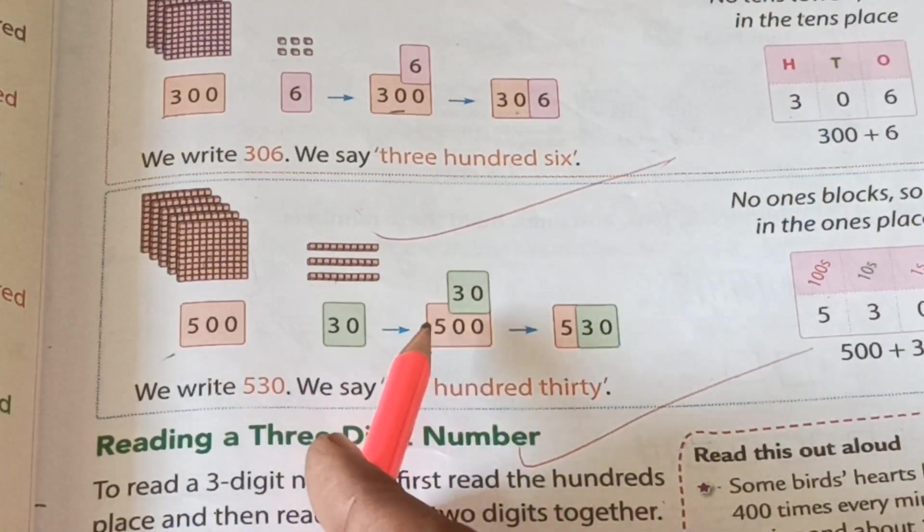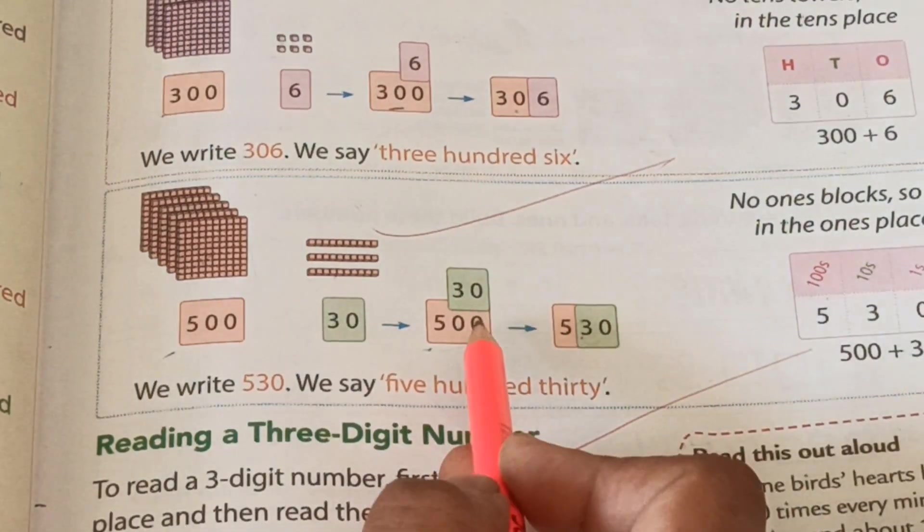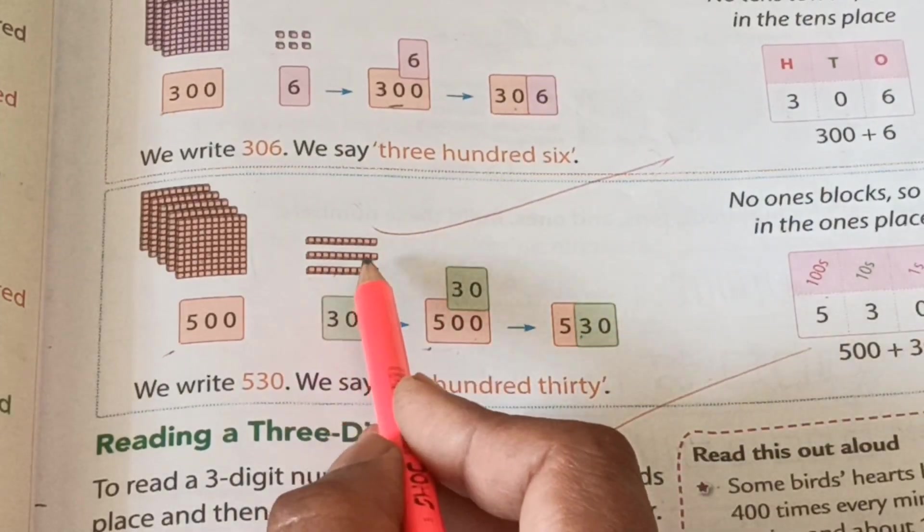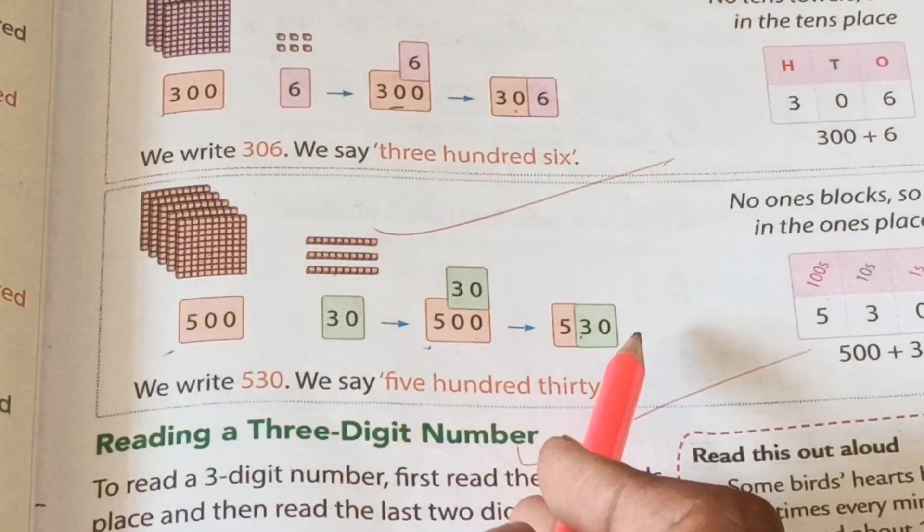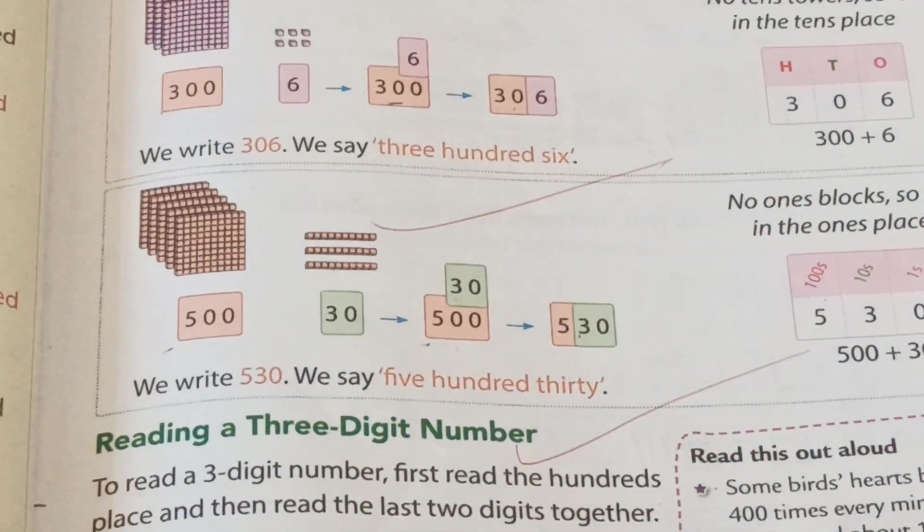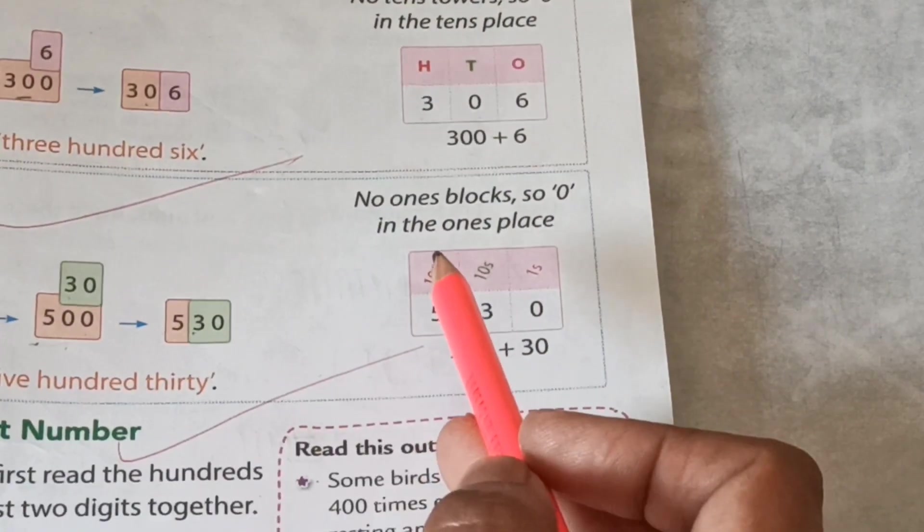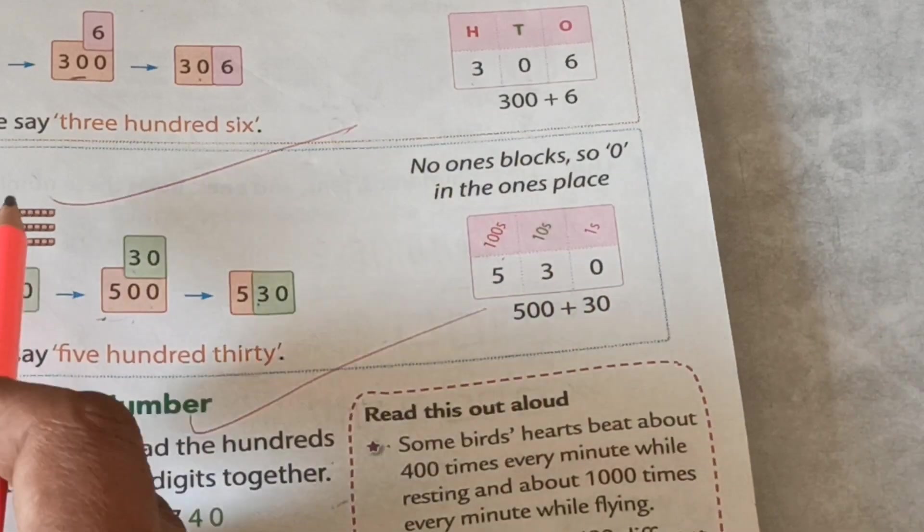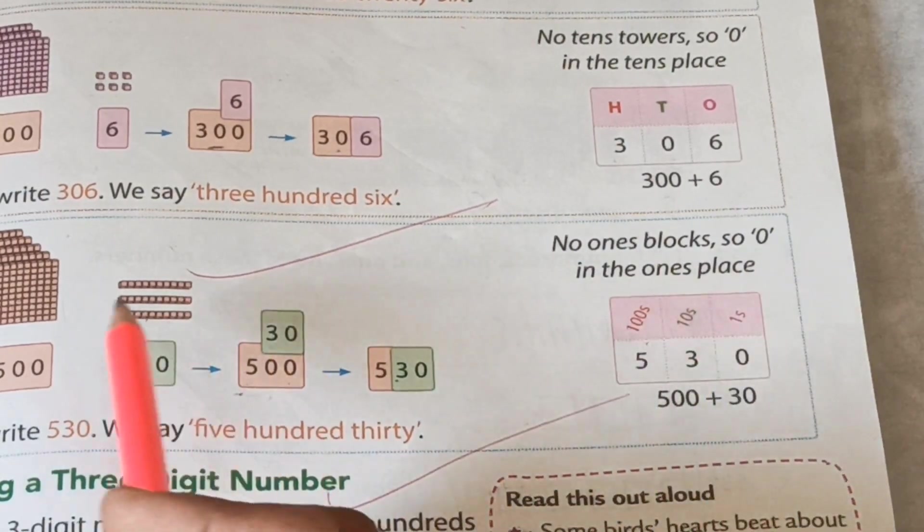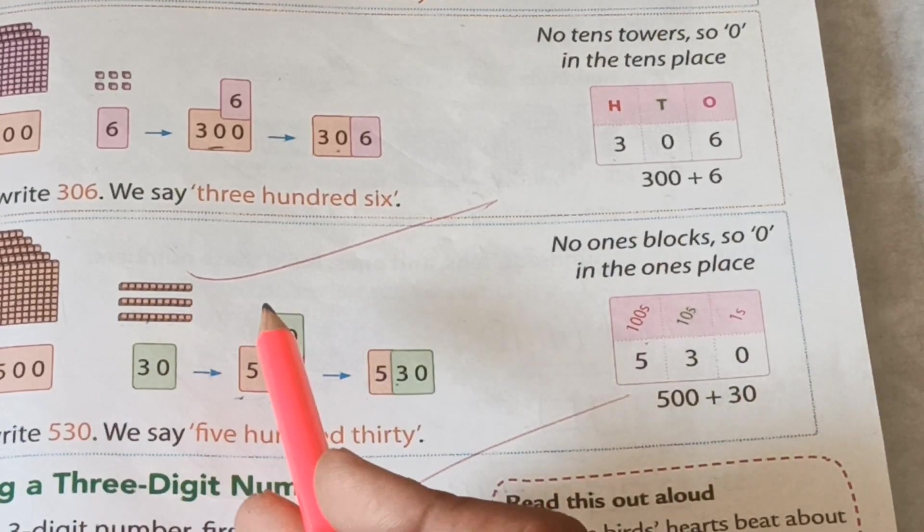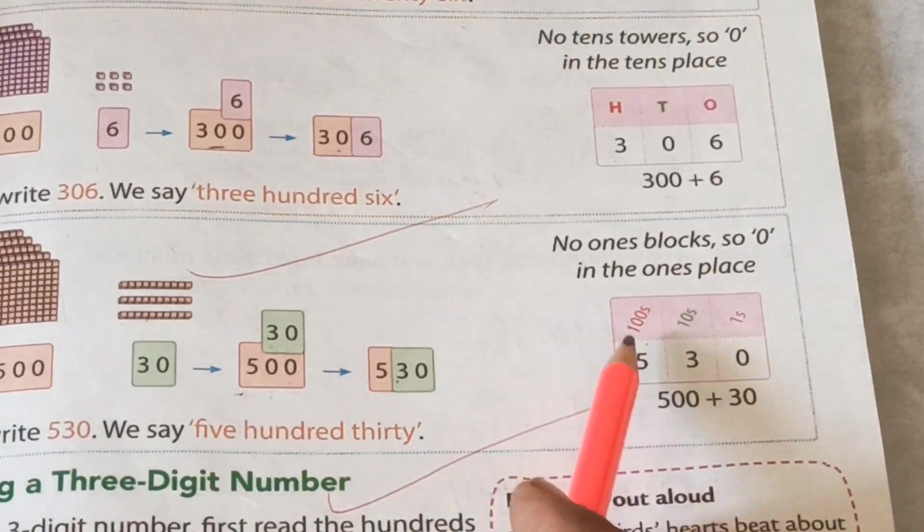500 and 30. This type: 5, 3, 0. 0 ones, 3 tens: 1, 2, 3 tens. And 500: 1, 2, 3, 4, 5 hundreds means 530, our number. Then how do we fill? Hundreds, tens, ones place. 5 in hundreds. Tens in 3 tens: 1, 2, 3. And how many ones? Nothing. You can see here, ones, no. Means we write here 0. Our number is 530. Write down that type.